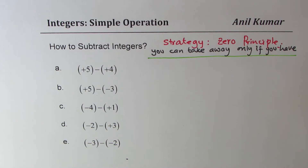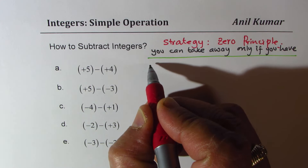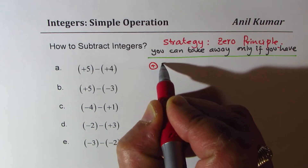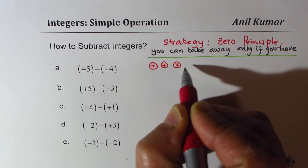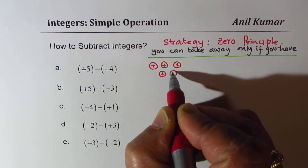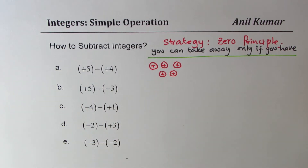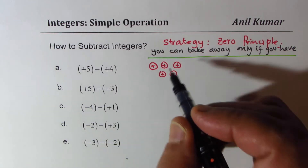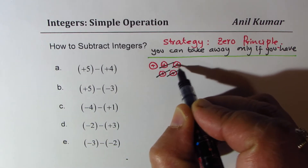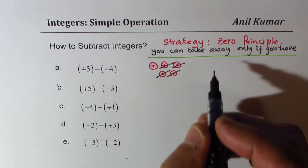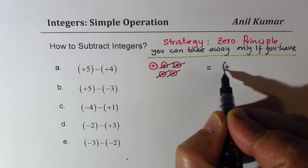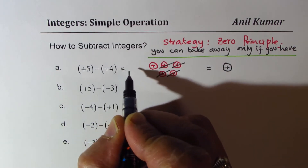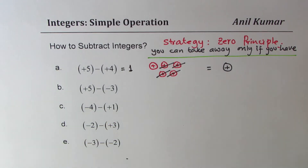In the first case, let's say we have plus 5. Let me use these numbers as plus numbers — we have 5. And we need to take away plus 4. So if I take away plus 4, what are you left with? You are left with 1 plus. So the result is 1 plus. I could write this as just the number 1 — it is not necessary to write plus for positive numbers. Plus is understood.